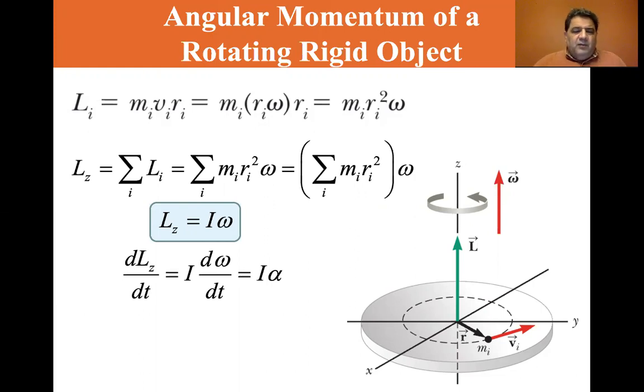Well, if we take d/dt of Lz, that's equal to I d omega/dt, equals I alpha.